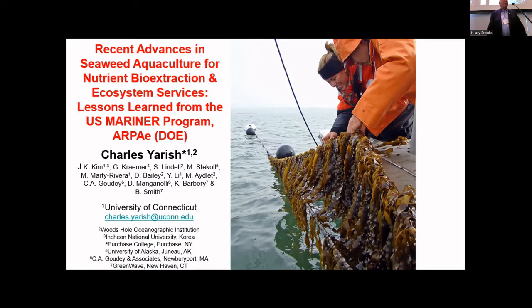There are different types of seaweeds. If we look at global areas of seaweed production, today we are producing around 35 to 36 million metric tons globally. Between 95 and 98% of that production has taken place in Asia.